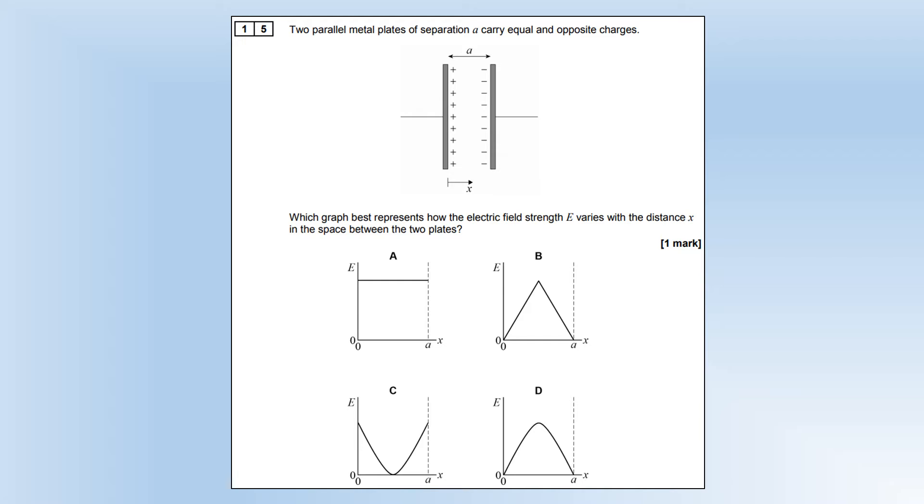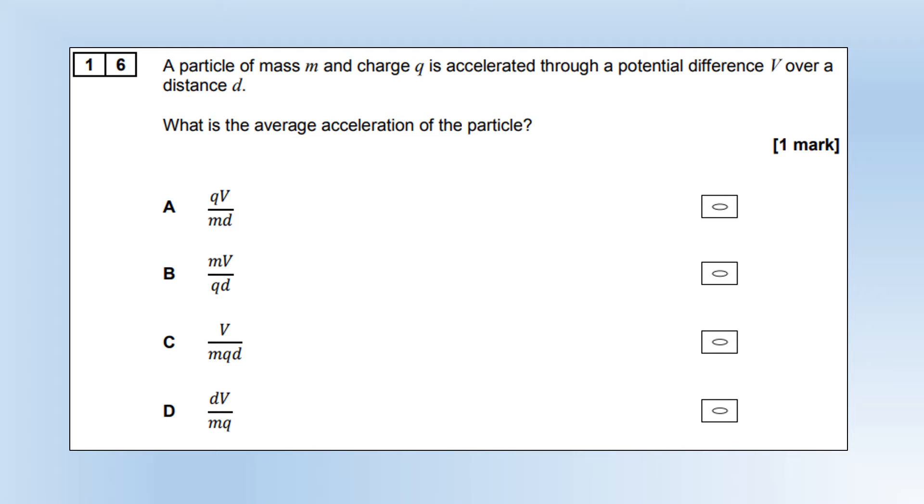Two parallel metal plates of separation A carry equal and opposite charges. Which graph best represents the electric field strength and how it varies with distance? Well, this is clearly a uniform field, so the field strength is going to be constant throughout. A particle of mass M and charge Q is accelerated through a potential difference V over a distance D. What is the average acceleration of the particle? The work done by the potential difference will be the charge times the potential difference. Force is work done divided by distance, so I've divided both sides by distance. Acceleration would be divided by mass, so we ended up with option A again.